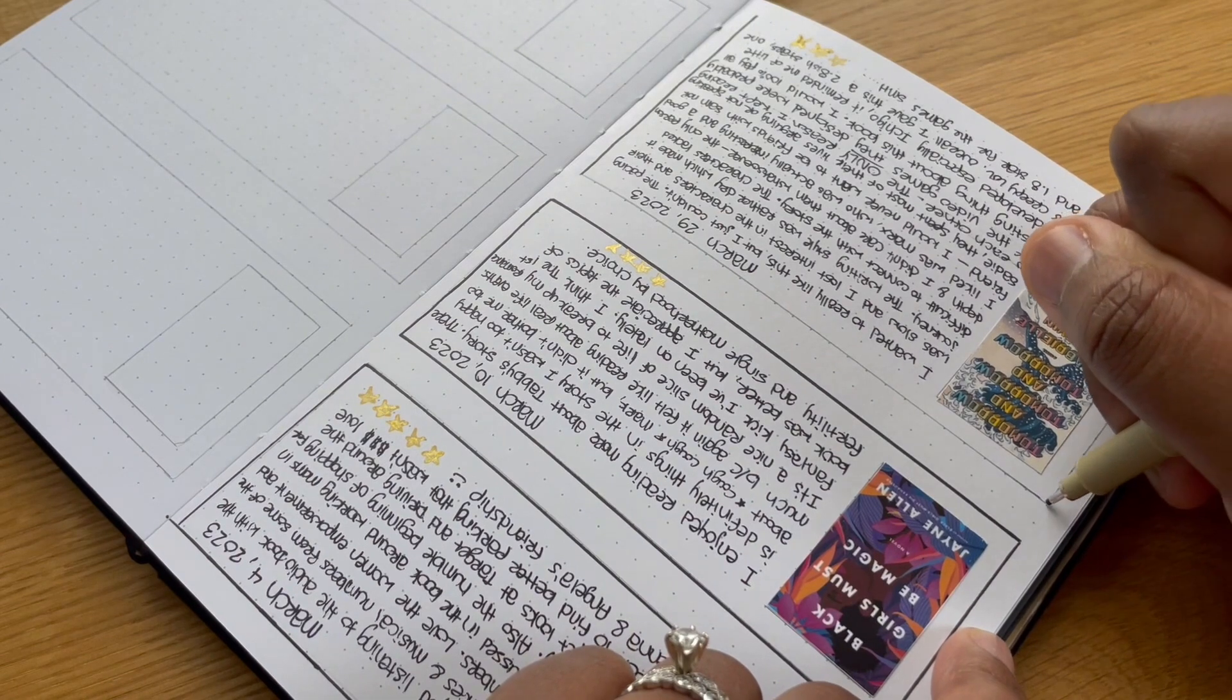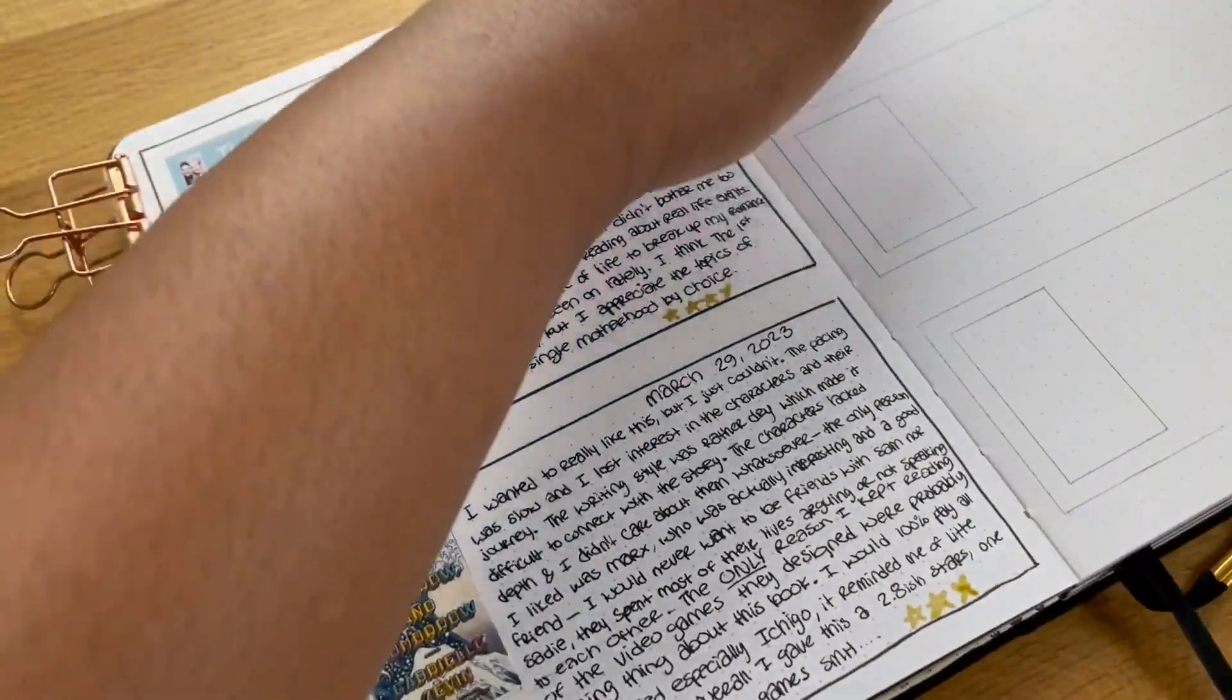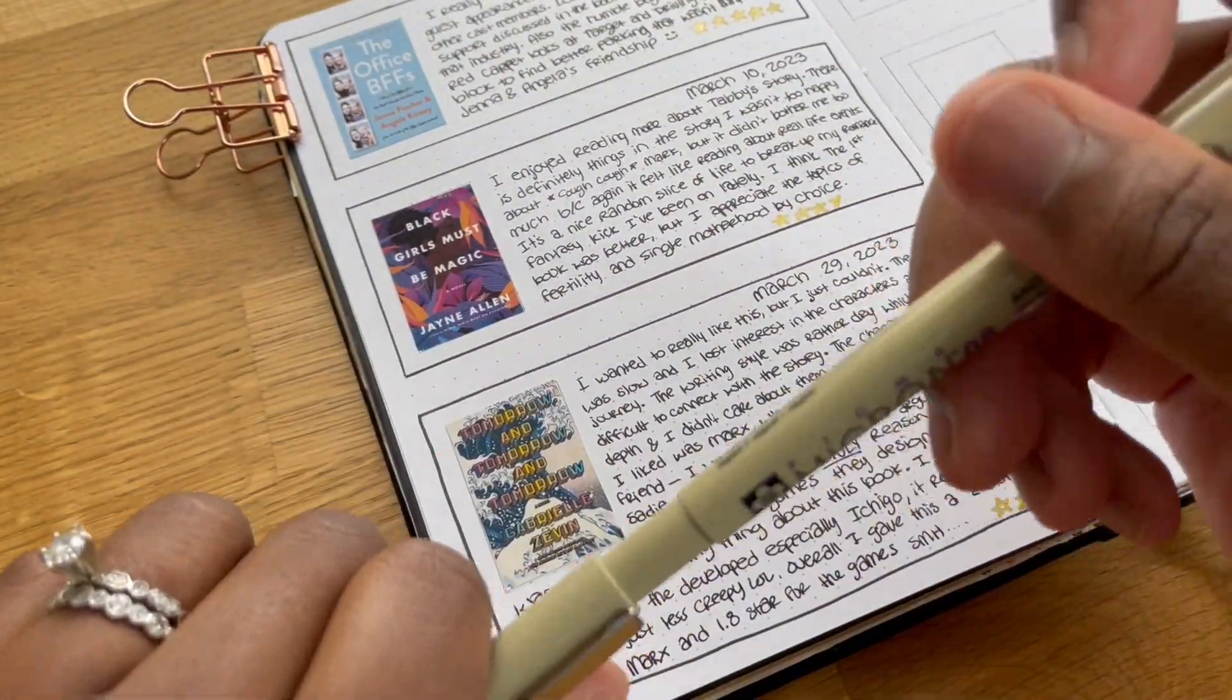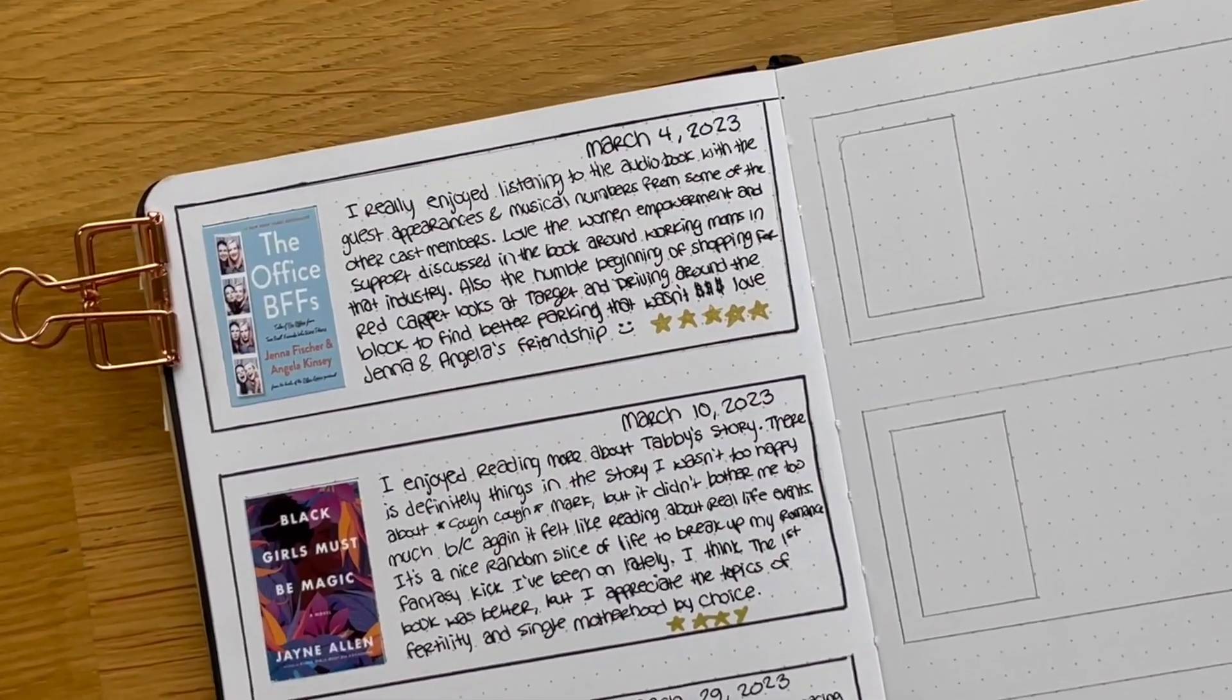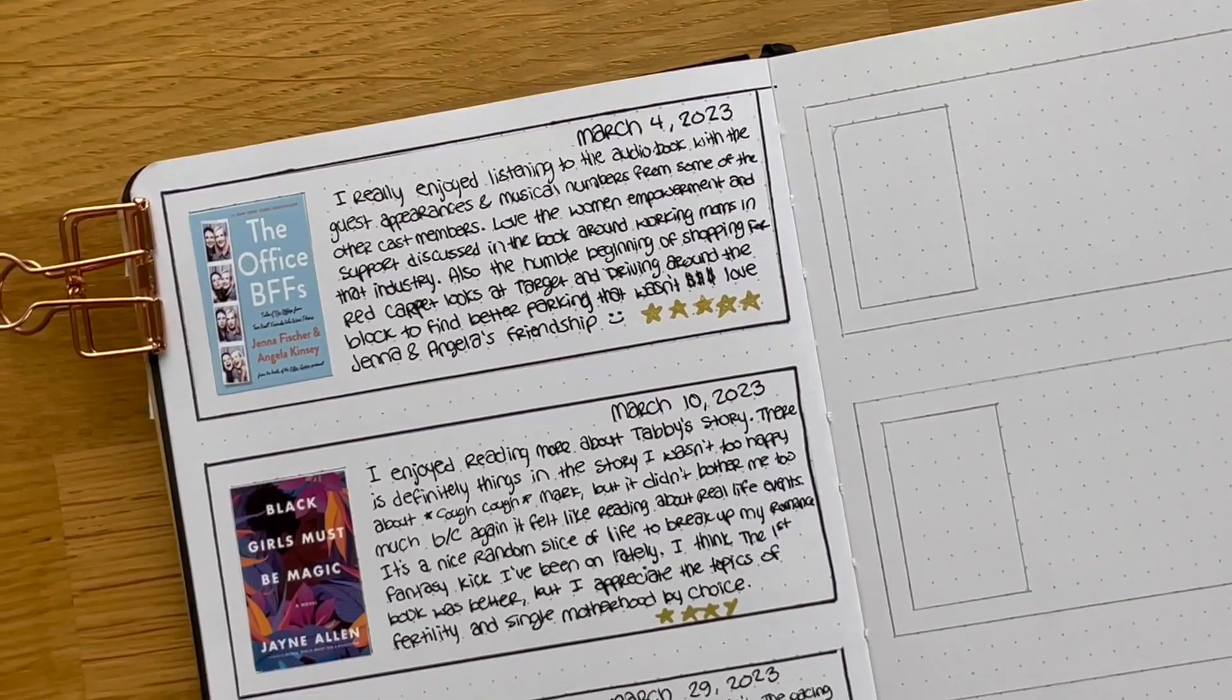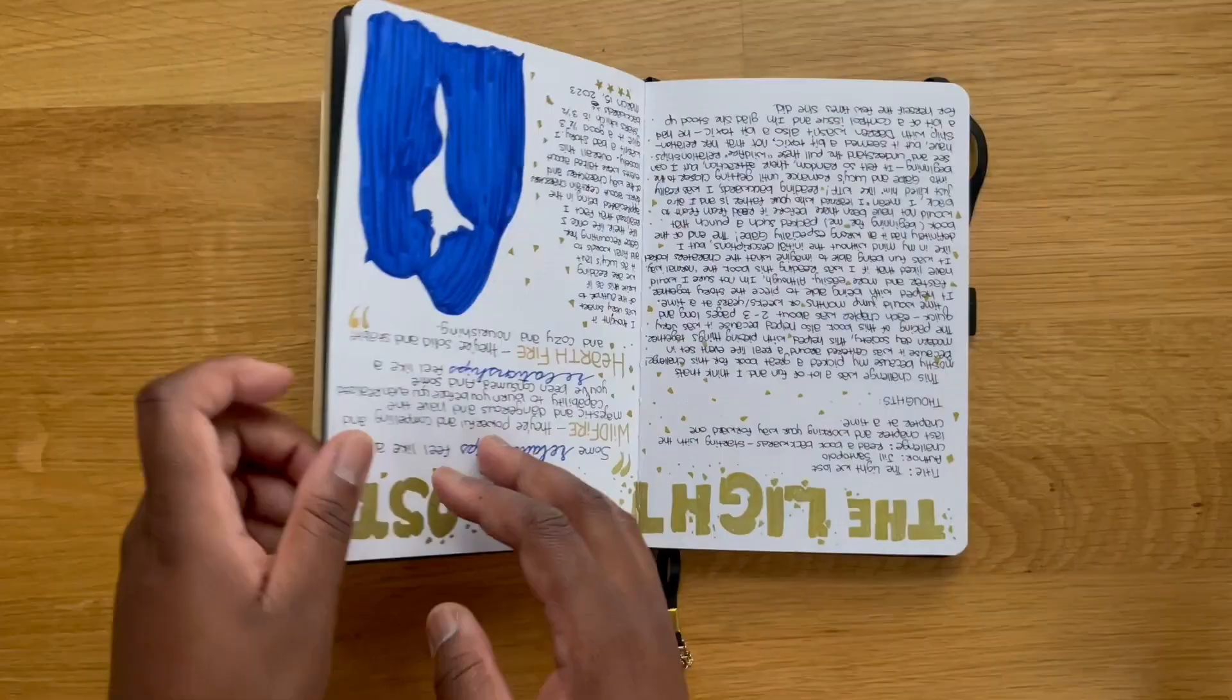Overall, I gave this book a very very low three stars on Goodreads. However, it's low-key more like a 2.8-ish stars because I'm giving one star for Marx and 1.8 stars for all the games they designed. I just don't understand why this book was so popular and how it even won best fiction for 2022. I just don't get it. But I guess it's not for me - it just wasn't for me.